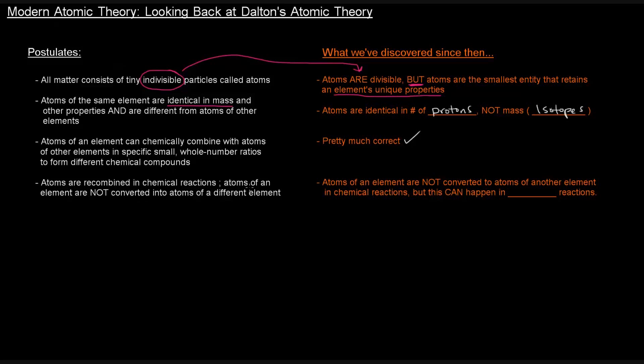Atoms are recombined in chemical reactions. Atoms of an element are not converted into atoms of a different element. So this first part is correct. This first part about recombining in chemical reactions, that's true. Atoms of an element are not converted into atoms of a different element. That's not quite right.